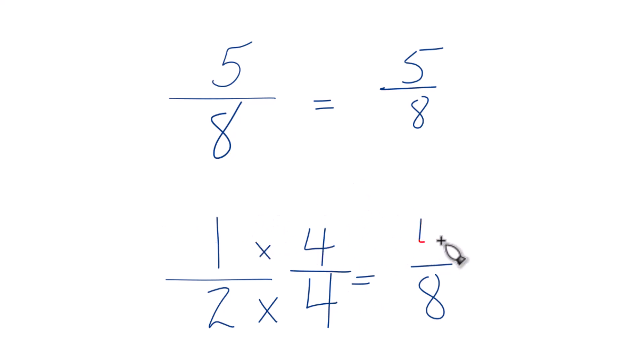1 times 4 is 4, and 4 eighths, that's the same value as 1 half. But now we have these denominators, they're the same, so we can compare the numerators, figure out which one of these fractions is greater.